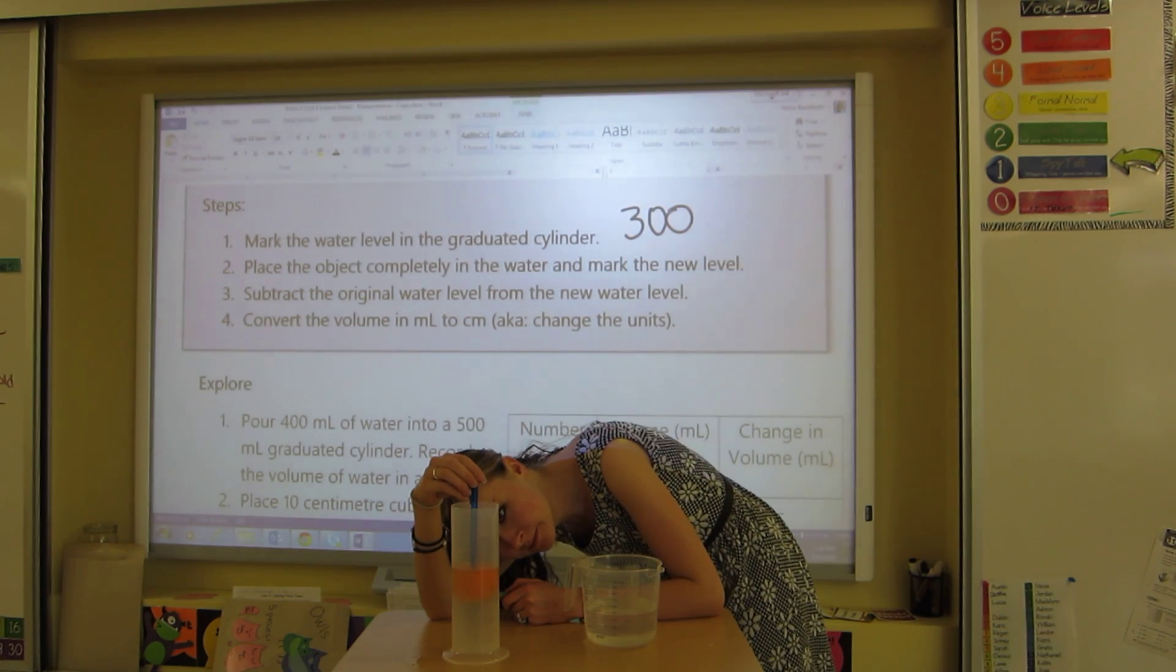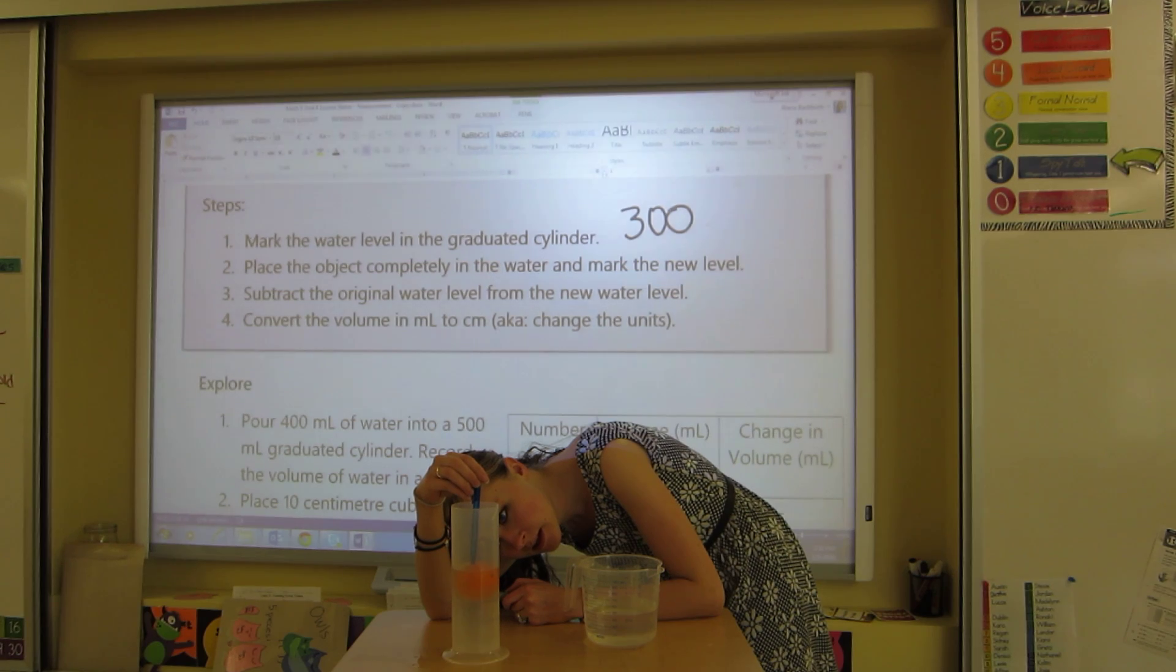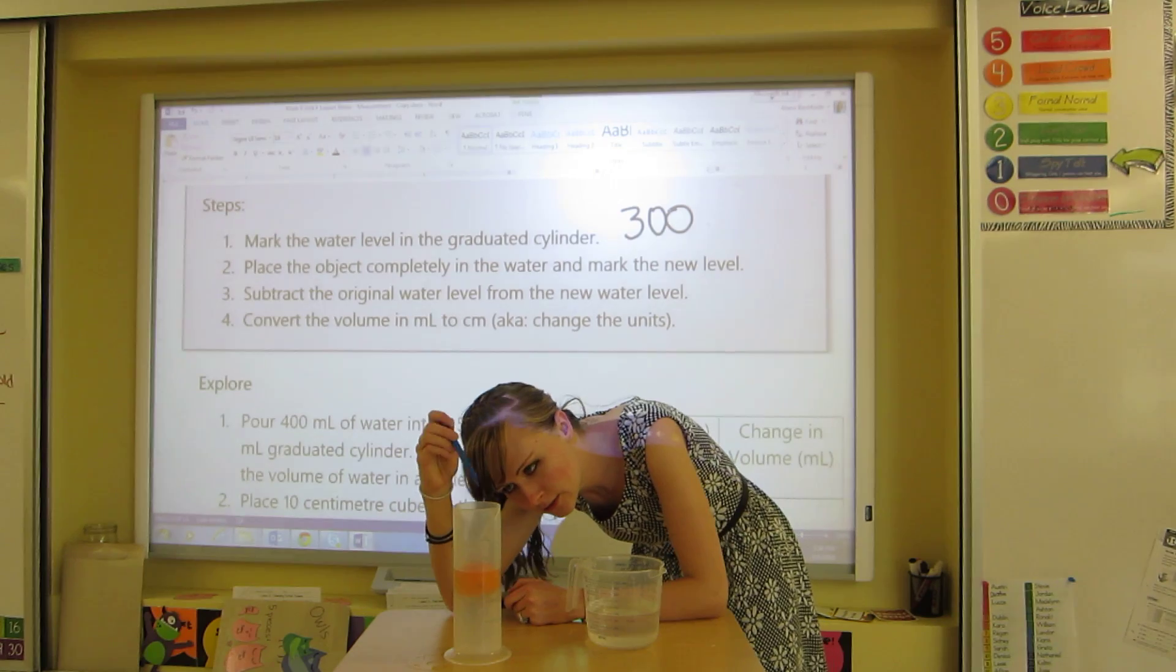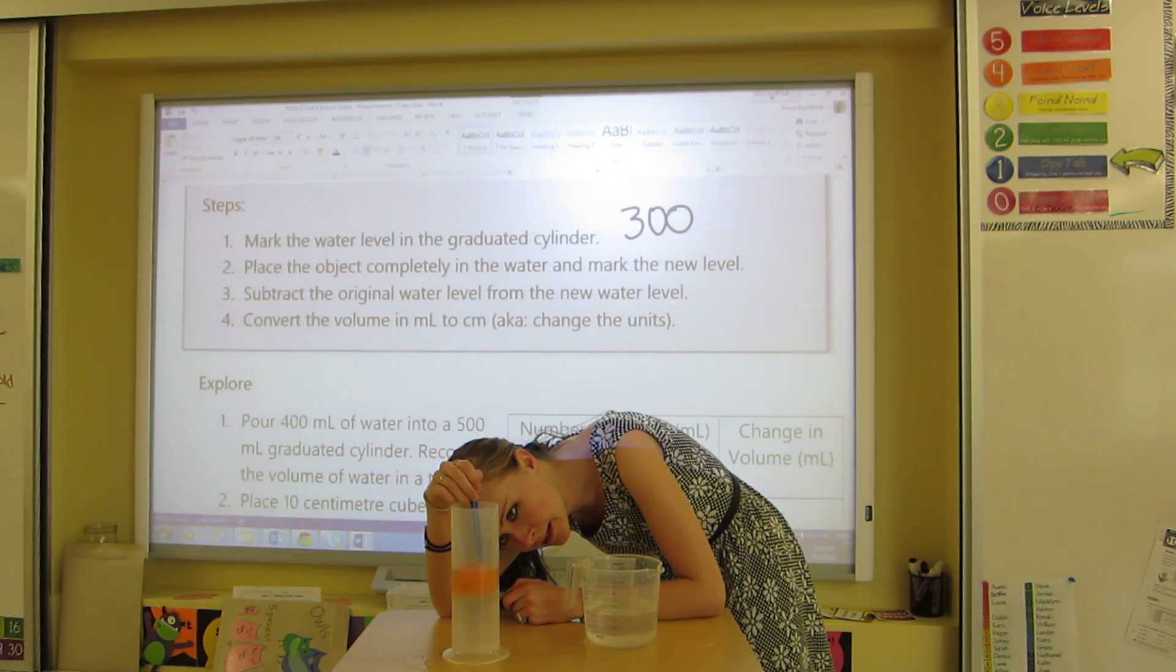So the new water level is 1, 2, 3, 4, 5. Okay, so each of those ticks is 10. My new water level is 390.